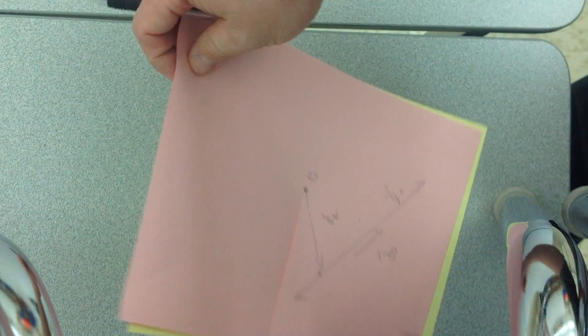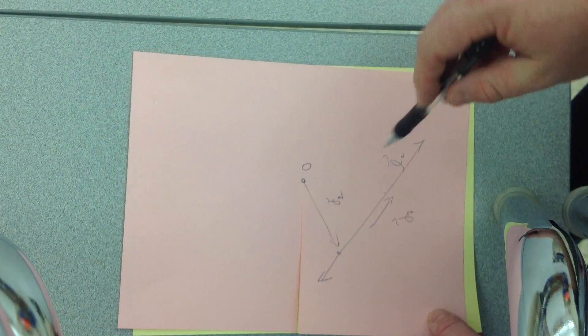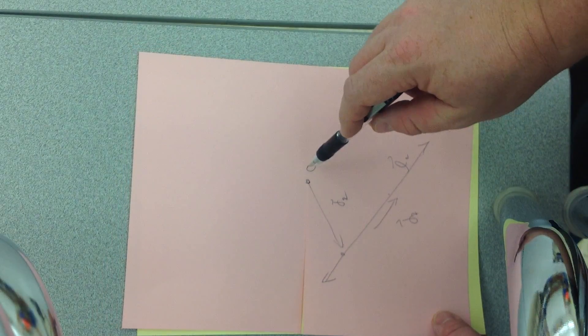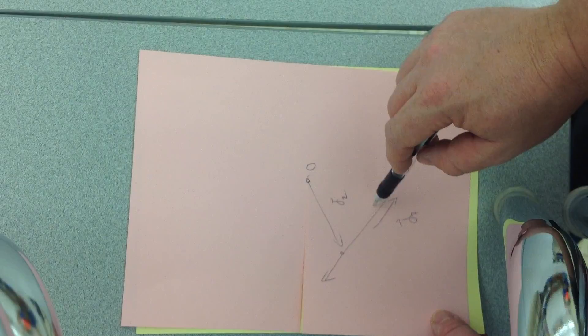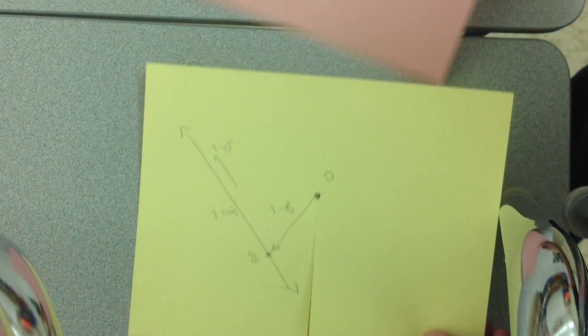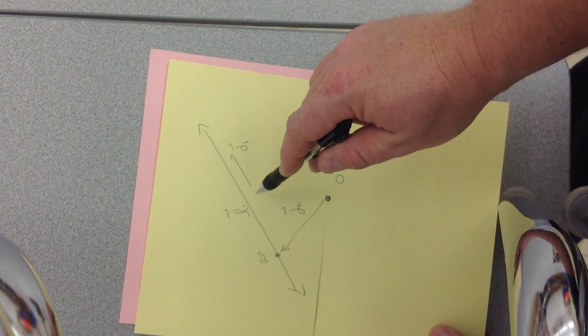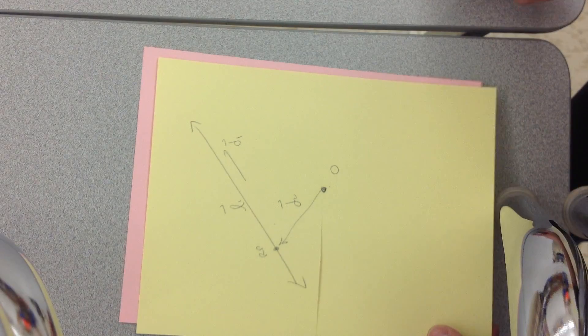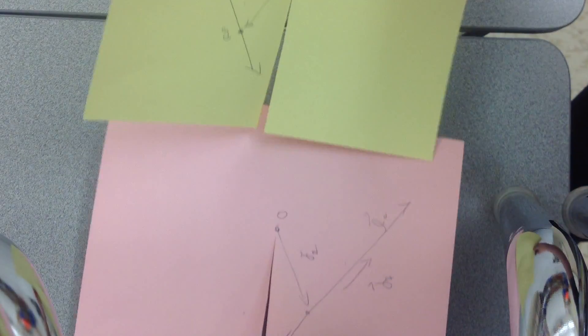So what this question wants us to do, they want to find the equation of a line that goes through the origin, through this line, and through this line, which all lie on different planes.